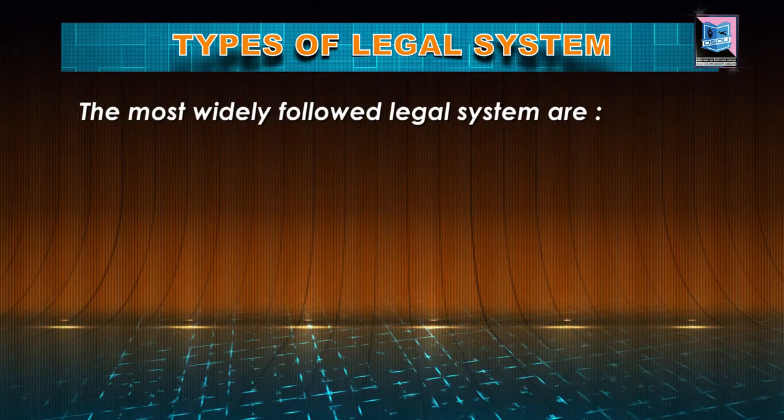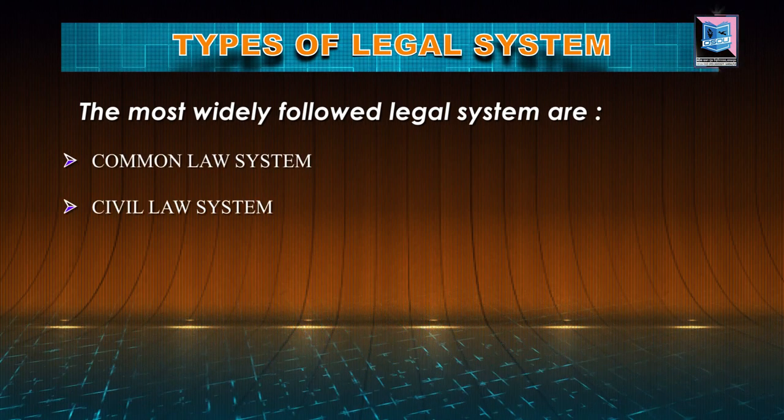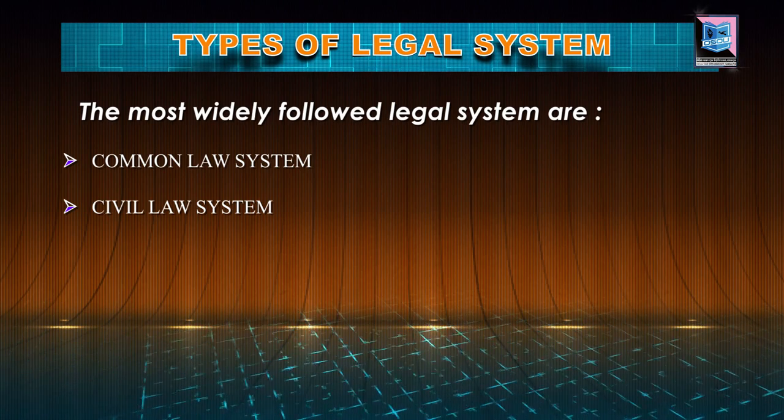Now, let's see what are the various types of legal system. Legal systems differ from country to country and sometimes even within the country. Some legal systems may even have some degree of similarity due to shared history, societal composition, traditions and customs. Out of these, the common law system and the civil law system are most widely followed in different parts of the world.